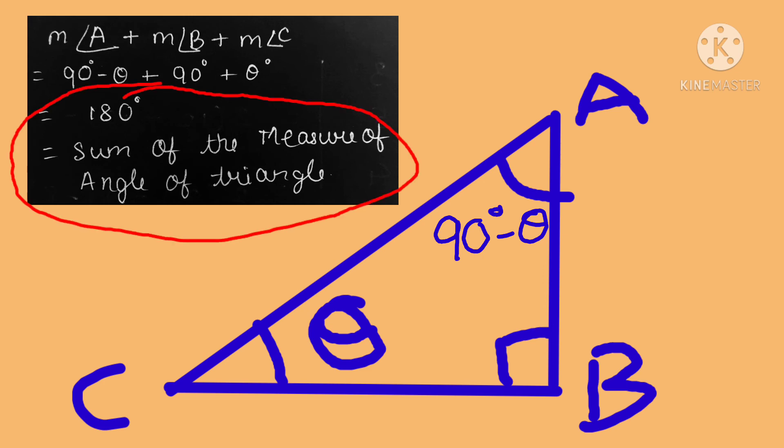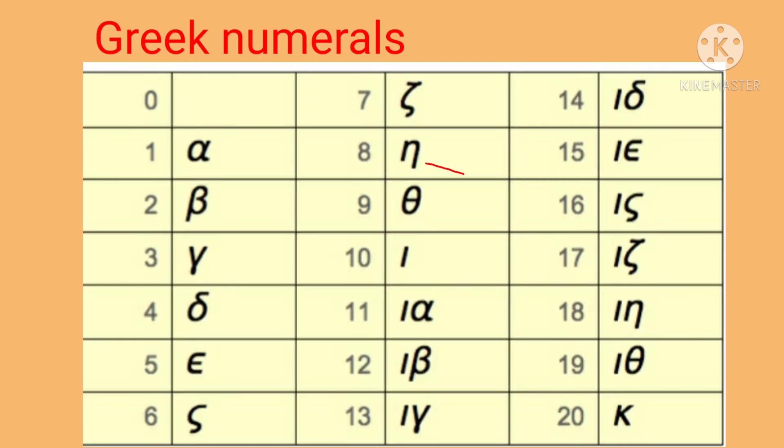This is the sum of the measure of the angles of the triangle. In Greek numerals, theta has the value of 9 and is a system of lowercase Greek alphabet.